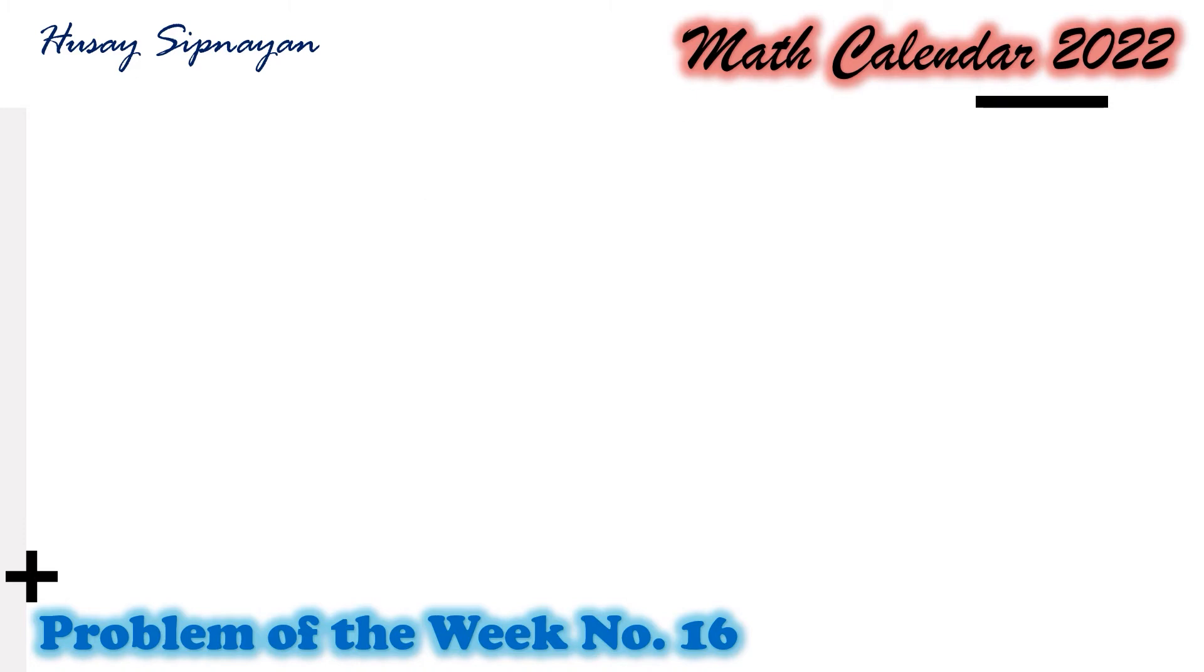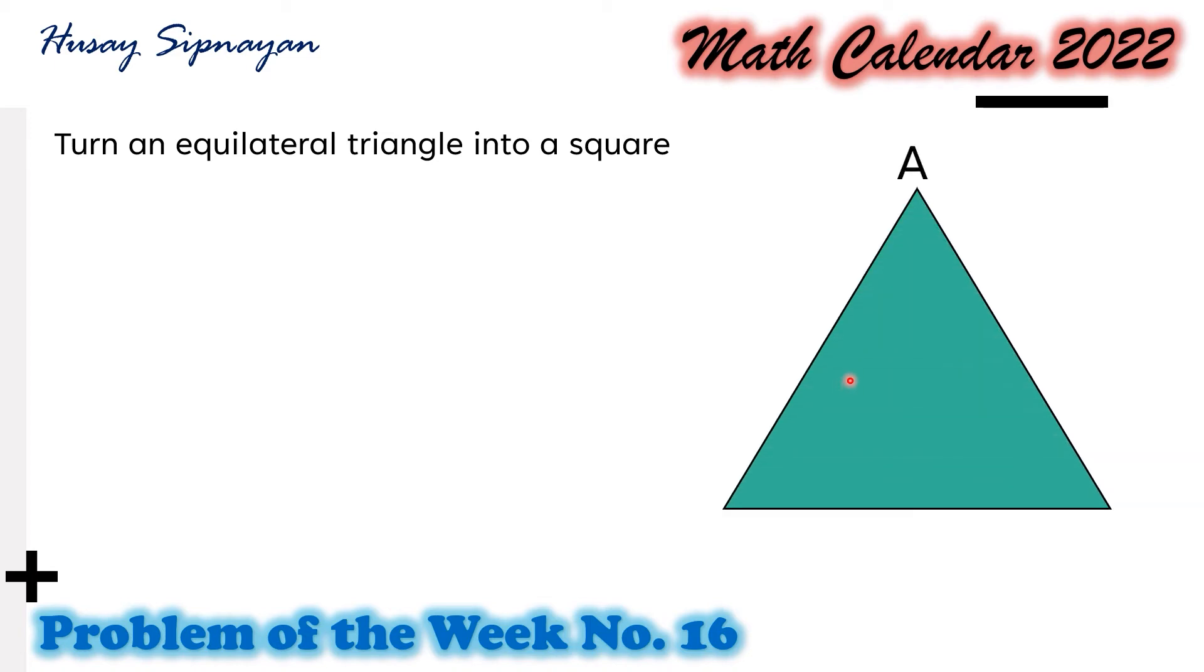Now, if we are curious on how to turn an equilateral triangle into a square, let us consider equilateral triangle ABC. From cutoutfoldup.com, it was discussed how to locate points on the equilateral triangle where it can be cut and then rearranged into a square.